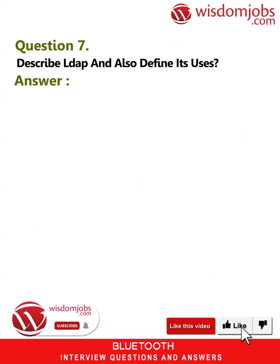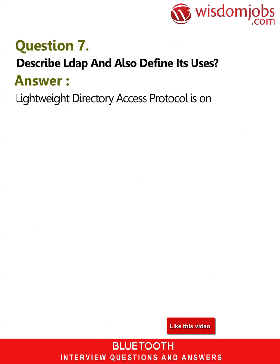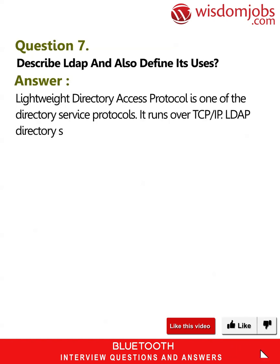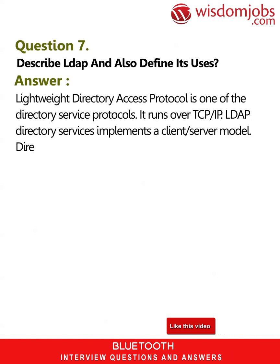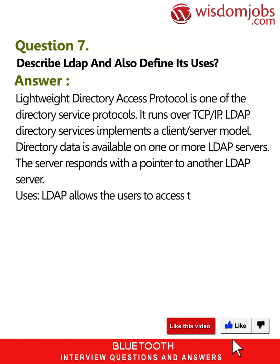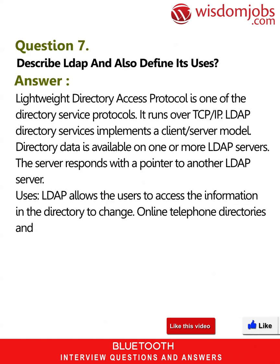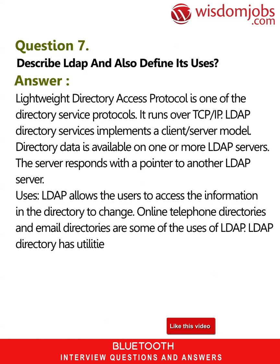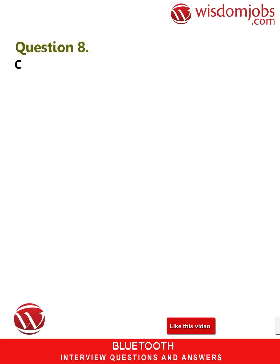Question 7: Describe LDAP and define its uses. Answer: Lightweight Directory Access Protocol (LDAP) is one of the directory service protocols. It runs over TCP/IP. LDAP directory services implement a client/server model. Directory data is available on one or more LDAP servers, and the server responds with a pointer to another LDAP server. LDAP allows users to access information in the directory to change it. Online telephone directories and email directories are some uses of LDAP. LDAP directory has utilities to modify, delete, and search entries.